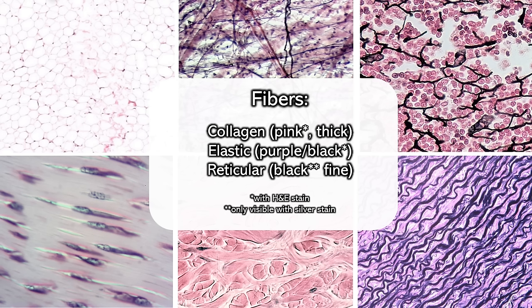Reticular fibers are generally not visible because you can only see them when silver nitrate is used, and oftentimes it is not. So in many examples, reticular fibers are present but invisible to you because the stain used could not soak into those fibers to make them visible.